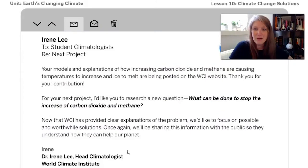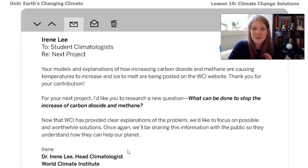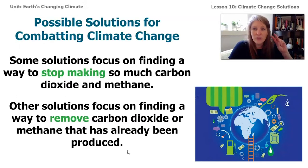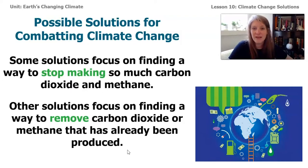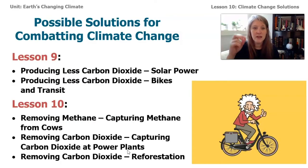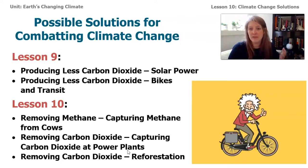We began looking at this in lesson nine. During that lesson, we read an email from Irene Lee — she's the head climatologist at the World Climate Institute. We've been working with them to understand what's causing the ice on our planet to melt, as well as helping them educate the public about what's causing climate change. There are two main ways to work on climate change: stop making so much carbon dioxide and methane, or find ways to pull it out of the atmosphere now that it's there. During lesson nine, we looked at two solutions — using solar power or bicycles and transit.